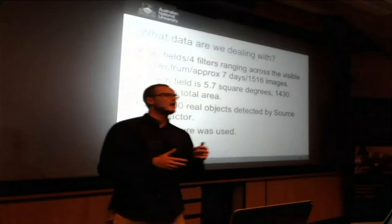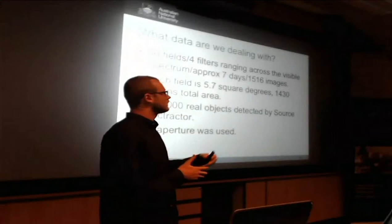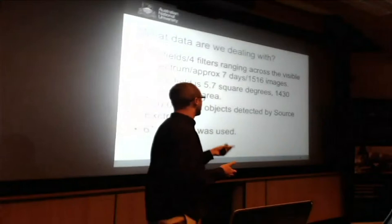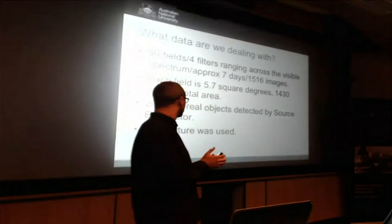Each field is 5.7 square degrees, and the moon is about 0.2 square degrees. One field would be about five by five moons, but with the 50 fields that's 1,430 moons total area. We're looking at quite a big area.